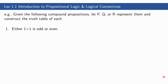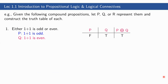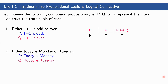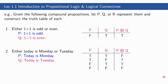Example: 'Either 1 plus 1 is odd or even.' P: '1 plus 1 is odd.' Q: '1 plus 1 is even.' Only one of them is true — that is Q. P is false, Q is true, so P XOR Q is true. Next example: 'Either today is Monday or Tuesday.' We use XOR here because it cannot happen that today is both Monday and Tuesday. P: 'Today is Monday.' Q: 'Today is Tuesday.' Since this is general, the truth table follows the standard XOR definition: true, true → false; true, false → true; false, true → true; false, false → false.